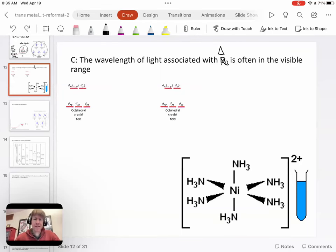Okay, so now back to the color part of how this works. The wavelength of light associated with delta zero, the crystal field splitting energy, is often in the visible range.